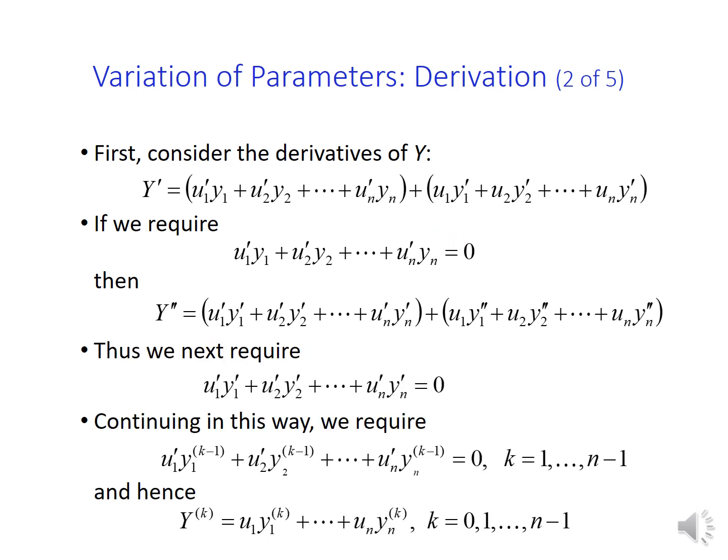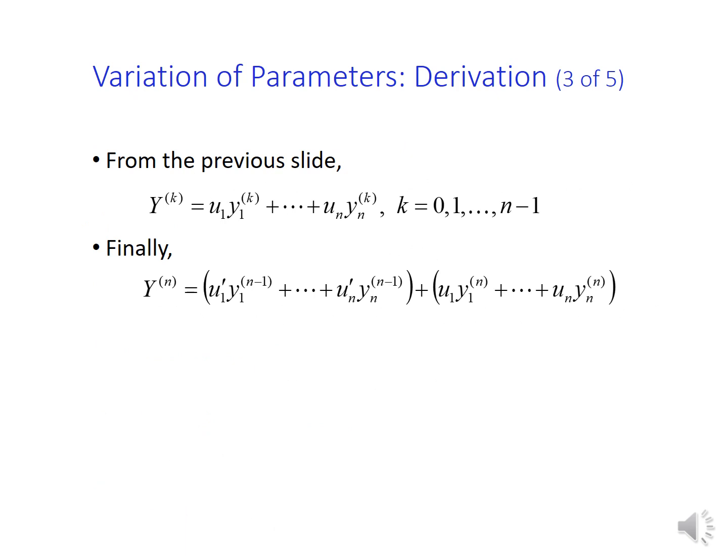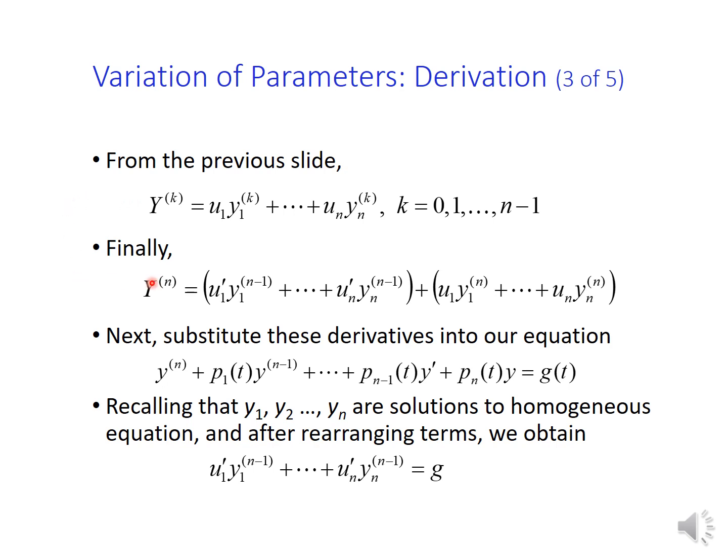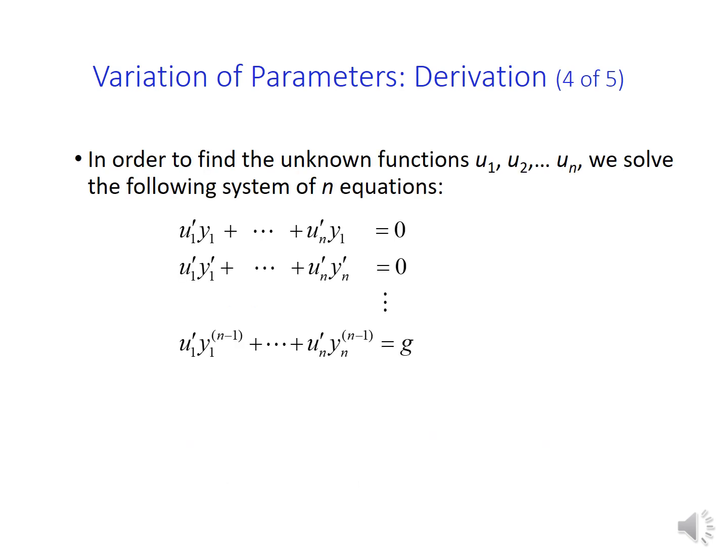And to find the higher derivatives of capital Y, we require a similar condition that is given here, and then we obtain a formula for the derivatives of capital Y, up to order n minus 1. Differentiating the first derivative of capital Y, we get the nth derivative of Y given by this expression. We substitute all the derivatives we found into the nonhomogeneous differential equation, and we obtain such an expression. It means that we end up with a system of n equations to figure out the functions u1 up to un.